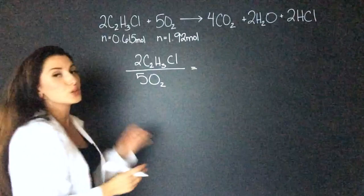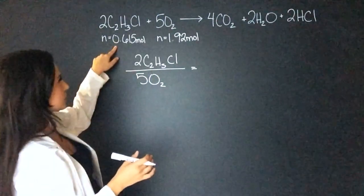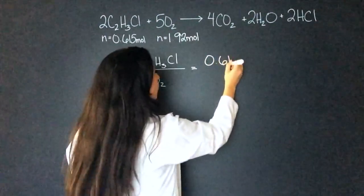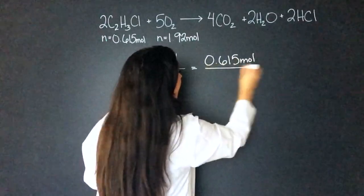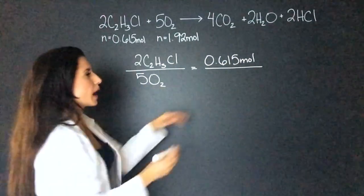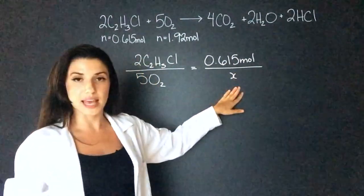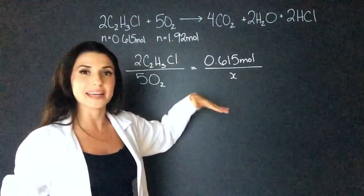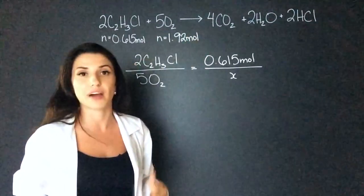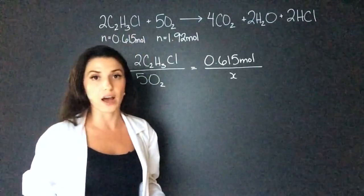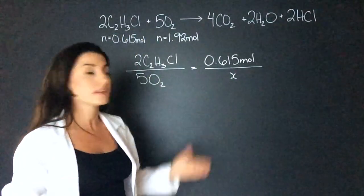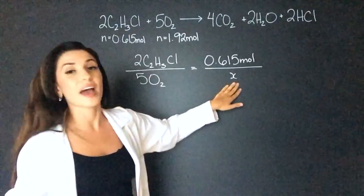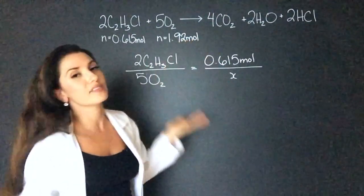So then I use the moles of only one. So I'll use the moles of C2H3Cl. That is 0.615 mole. And then for the moles of O2, I'm going to put X and I'm going to solve for this. And pretty much what I'm looking to see is how many moles of O2 I need to react with 0.615 moles of C2H3Cl. If this X is more than what I have here, then I know that O2 is going to be the limiting reagent and I'm going to run out of that. Now if X is less, then I know I'll have excess oxygen.